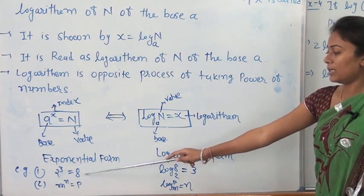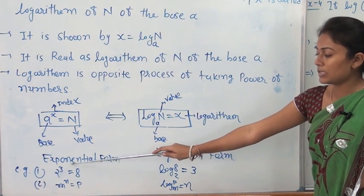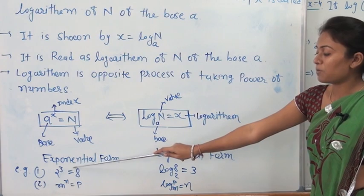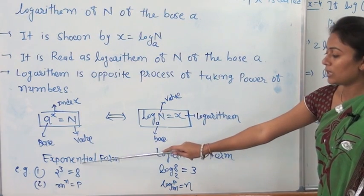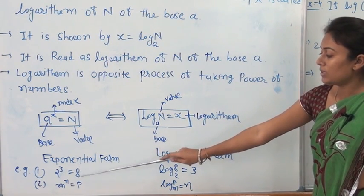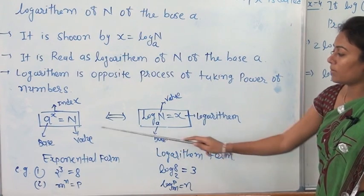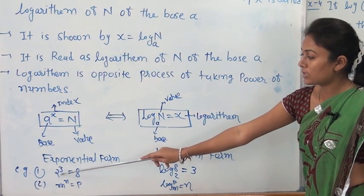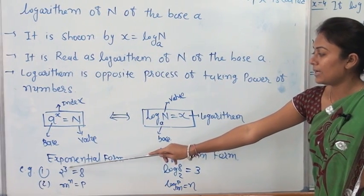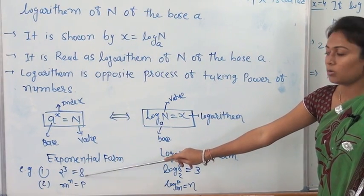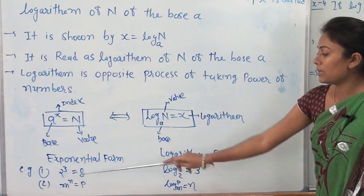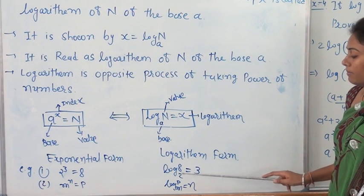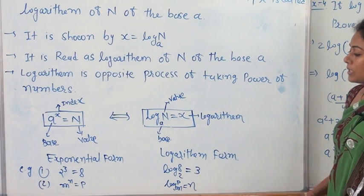Suppose we have the example 2 cube equal to N — that is, 2 cubed equals 8, which is in exponential form. If we have to convert this exponential form into logarithm form, by using the two forms you can easily convert it. Here 2 is the base, 3 is the index, and N equals 8. Putting these values into the logarithm form, we get log 8 base 2 equal to 3.